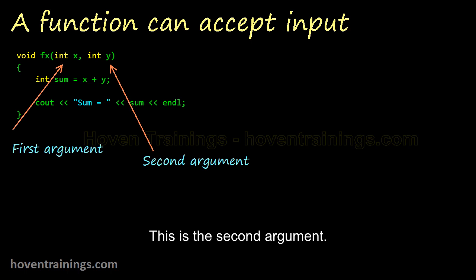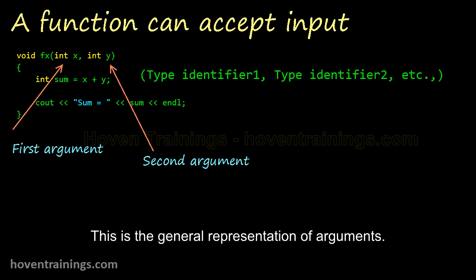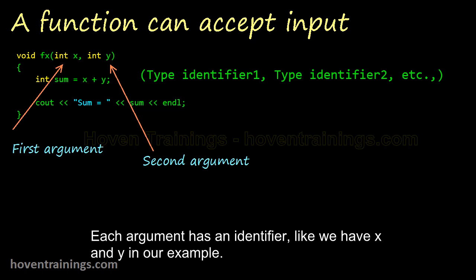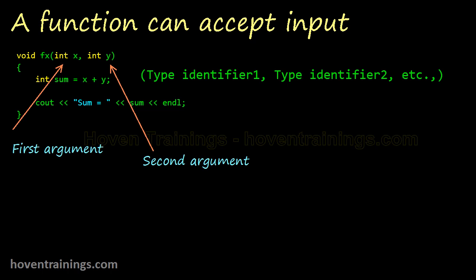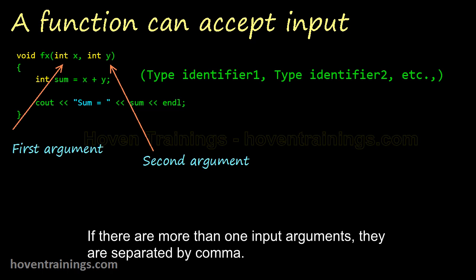This is the second argument. Its type has also to be mentioned here itself. This is the general representation of arguments. Each argument has an identifier, like we have x and y in our example. If there are more than one input arguments, they are separated by comma.